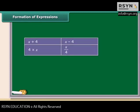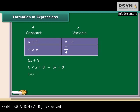Algebraic expressions are formed by combining variables and constants with the help of addition, subtraction, multiplication, and division. Let us see how the algebraic expression 6X plus 9 is formed. It's really simple. First, multiply variable X with constant 6, then add a constant 9 to the product. Similarly, 14Y minus 30 is obtained by first multiplying Y by 14 and then subtracting 30 from the product. These expressions were obtained by combining variables with constants. You can also obtain expressions by combining variables with themselves or with other variables.